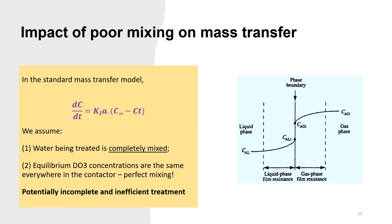Why are we so concerned about mixing? Let's take a look at our standard mass transfer model. We assume that one of the biggest driving forces is the concentration gradient. When we look at the concentration gradient we assume that Ct assumes it's completely mixed. It assumes the water is completely mixed and that the equilibrium dissolved ozone concentrations are the same everywhere in the contactor. That is very difficult to achieve when we have poor mixing.